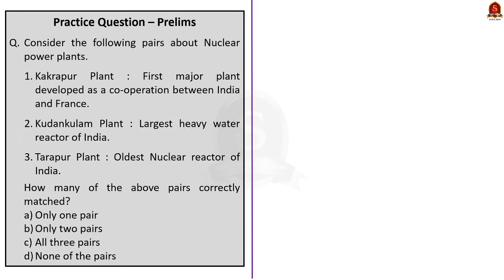The second question is about India's nuclear power plants and matching pairs. Kakrapur plant as the first major plant developed in cooperation between India and France is incorrect — it is India's first indigenously developed reactor. Kudankulam plant as the largest heavy water reactor of India is also incorrect — it is India's largest light water reactor. The Tarapur plant as the oldest nuclear reactor of India is correct. So the correct answer is option A — only one pair is correctly matched.